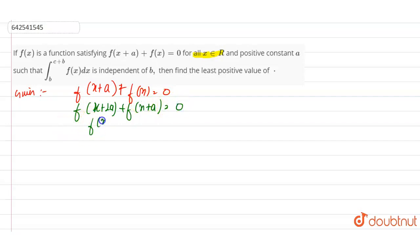That's why f(x) = f(x+2a). Thus, f(x) is a periodic function with period 2a.